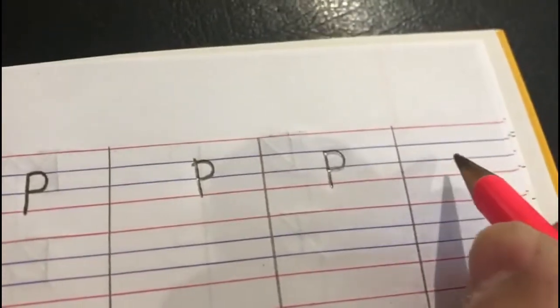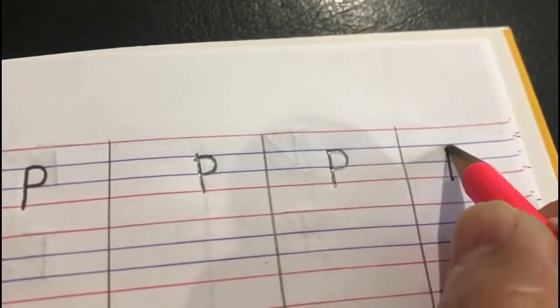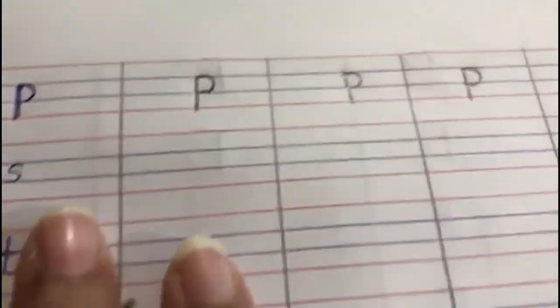Now, children, moving to letter p. Small p. Okay? So, we start from the blue line. We go down and bumpity. P. Start from the blue line, go down, bumpity. P. Start from the blue line, go down, bumpity. P. P says p. P says p.